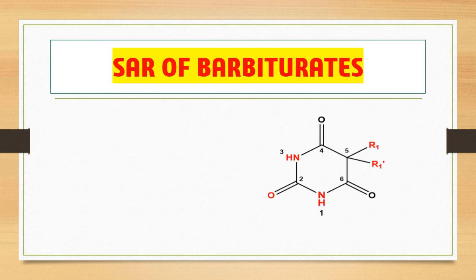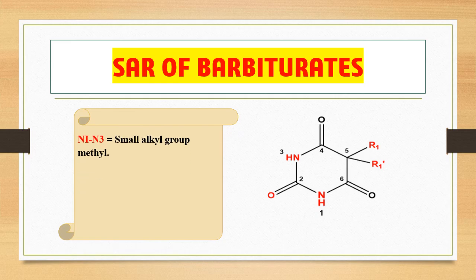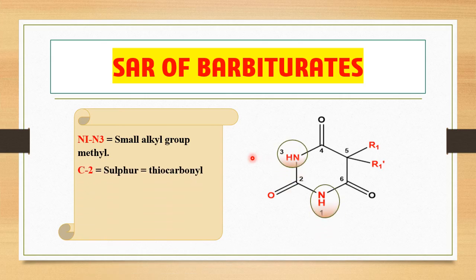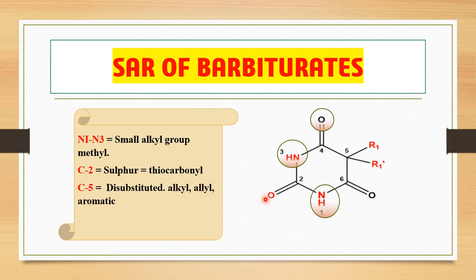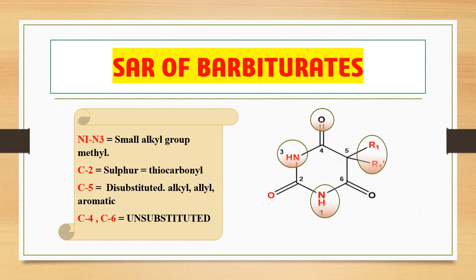Now let's discuss the different sites in the chemical structure of barbiturate where substitution can be made. The substitution sites are: N1 and N3 positions, which can be substituted by a small alkyl group such as methyl; the C2 position, where the oxygen can be replaced by a sulfur atom to yield a thiocarbonyl derivative; and the C5 position, where di-substitution is necessary using alkyl, allyl, or aromatic rings. The C4 and C6 positions must be left unsubstituted.